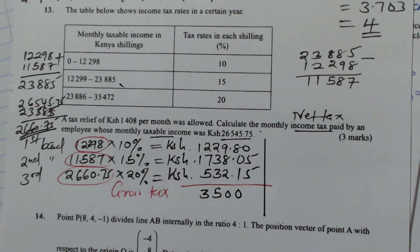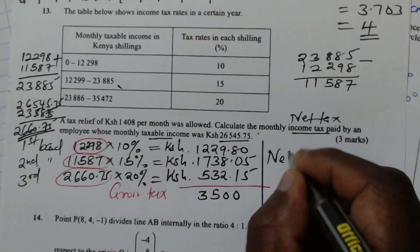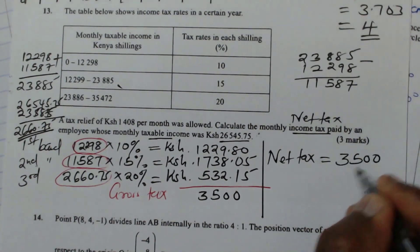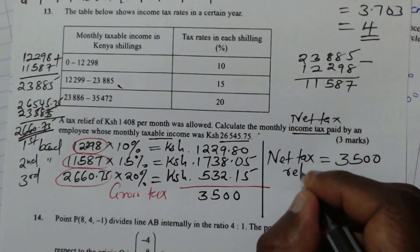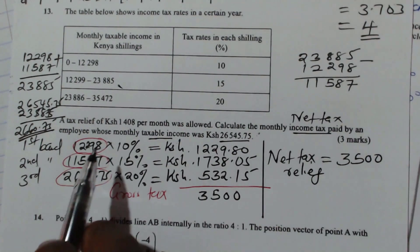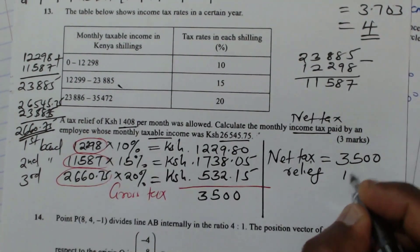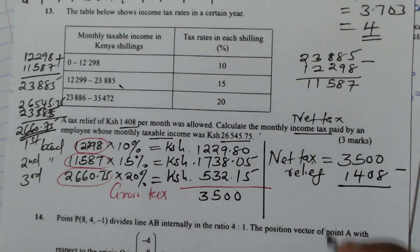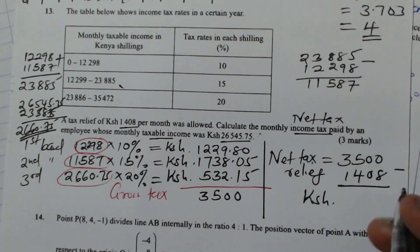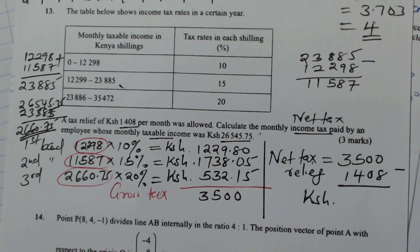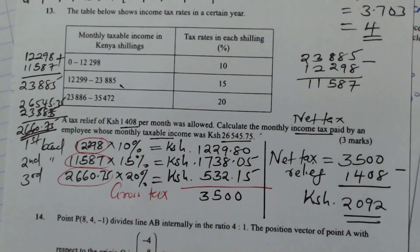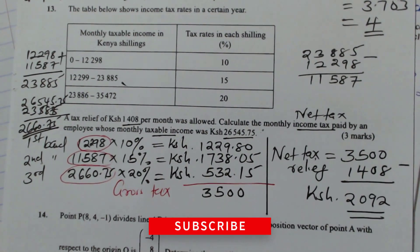That is a gross tax. Now to get the net tax, we shall less. So net tax, we take the gross tax, which is 3500 and then we less the relief and the monthly tax relief is 1408. So this will give now the income tax, which is required. When we subtract that, we get 2092. That is how we're supposed to solve that question.